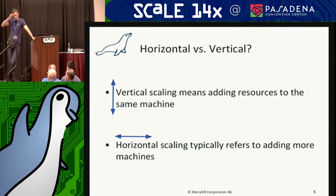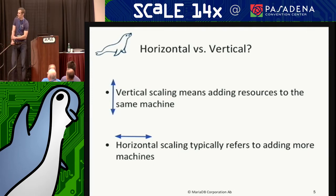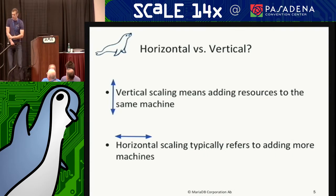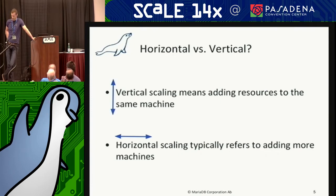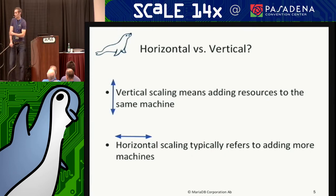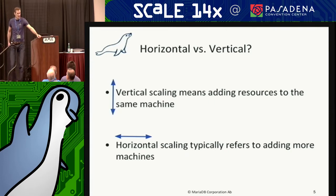When we talk about scaling, we differentiate between horizontal and vertical. Vertical means you add more resources to your machine, and horizontal means you add more machines. In the MySQL world, we've been doing a lot of horizontal scaling. It's a lot less interesting to just add resources. Typically when you do horizontal scaling, it adds pain — especially if you do sharding. When you add more nodes it becomes more complex to manage. Adding more resources to one machine is typically a much easier solution.